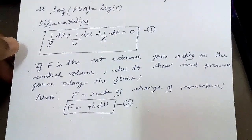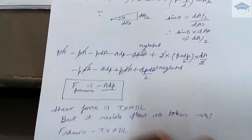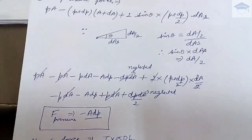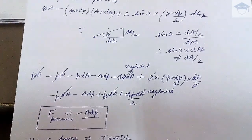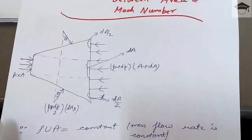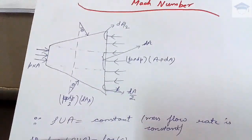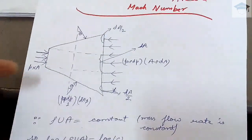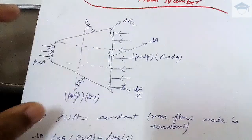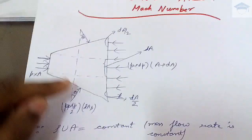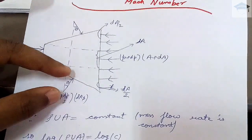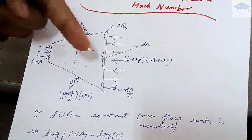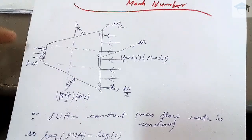Now, the net pressure force in the x direction is: pA − (p + dp)(A + dA) + 2·sinθ·(p + dp/2)·dAs. Here, p·A acts in the positive x direction and (p + dp)(A + dA) acts in the negative direction. The slant area force has two components; we take the x-component, which is sinθ, so 2·(p + dp/2)·dAs·sinθ.